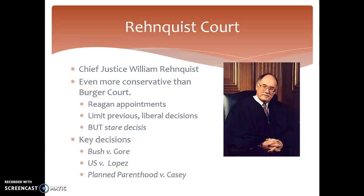Then there's the Rehnquist Court under Chief Justice William Rehnquist — an even more conservative court than the Burger Court, largely because Reagan appointed many Supreme Court justices in the 1980s. However, they were limited by previous liberal decisions through stare decisis, which means 'let the decisions stand' — showing respect for precedents set by former courts. So it's not the case that when a conservative court comes in, they just overturn everything liberal, like Roe v. Wade or school desegregation, because those things have already been ruled on and it's difficult to do a mass overhaul.